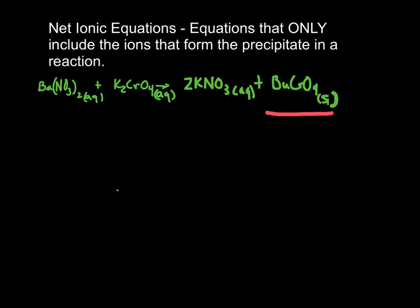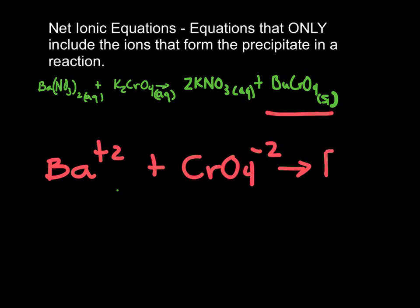So here we have barium chromate as our precipitate. What two ions make barium chromate? You're right. We have the barium ion and the chromate ion. They are what come together to form barium chromate.